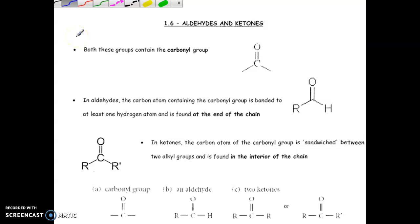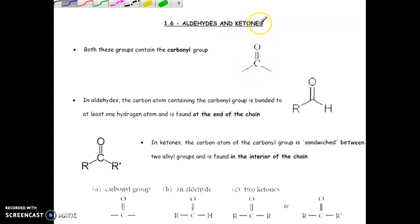Okay, hello everyone. We are going to be looking at the next couple of functional groups. We have two that are kind of paired up together because they have a similar portion of the functional group that are part of the overall structure. We have an aldehyde and we have something called a ketone. Both of these groups have something called a carbonyl group — or carbonyl, depending on how you want to pronounce that, it's like tomato/tomato.